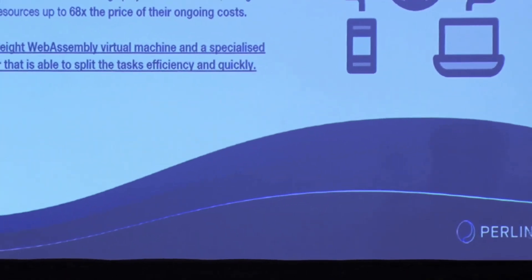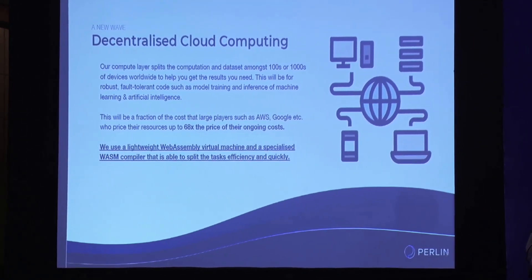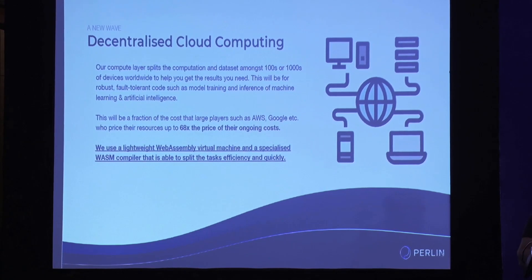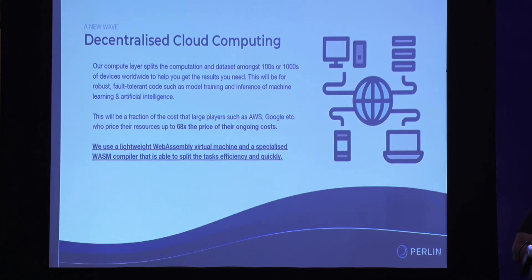Introducing Perlin — a decentralized cloud computing company. We're essentially an Airbnb for cloud computing. We connect mobile and laptop resources to people that might need it — for example, AI scientists and machine learning people. We have our own virtual machine based on WebAssembly, which you install on your mobile phone, laptop, or any device. We also have a software development kit with privacy tools to build models that run on this platform, and we're actually much cheaper than our alternatives.